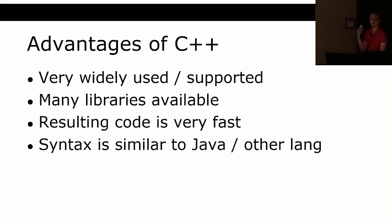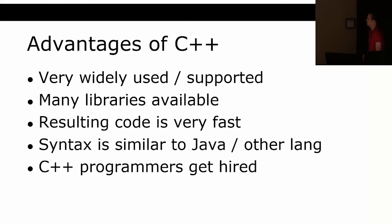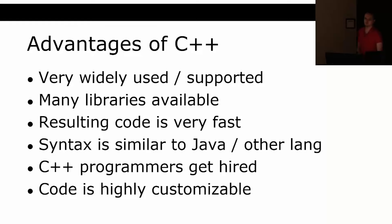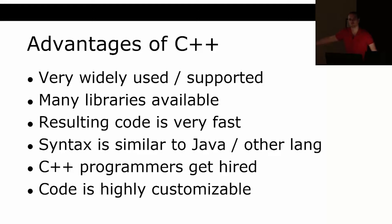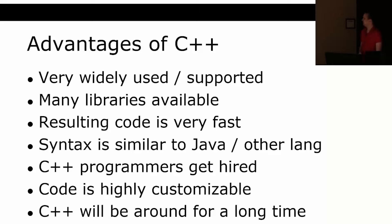The syntax is very similar to Java and other languages in terms of declaring classes, functions, and for loops. C++ programmers get hired — there are lots of companies looking for them. The code is highly customizable: you can overload operators and do all sorts of things, but that is also a disadvantage. If you're reading someone else's code, you're not sure what it's doing because they could have defined operators to do completely different things elsewhere. We're not going to be bad C++ programmers — we'll make sure our code does exactly what it says.